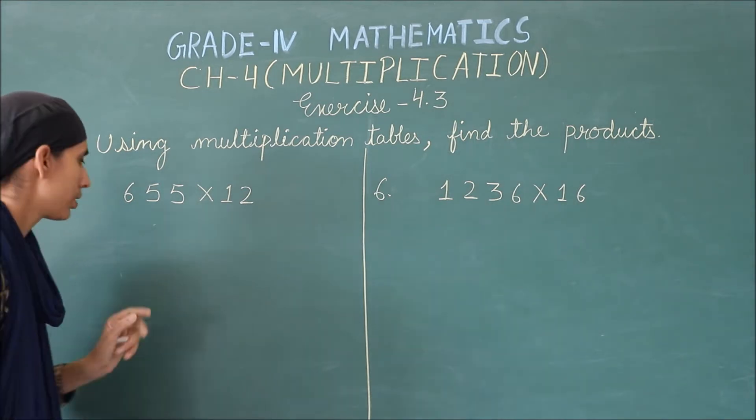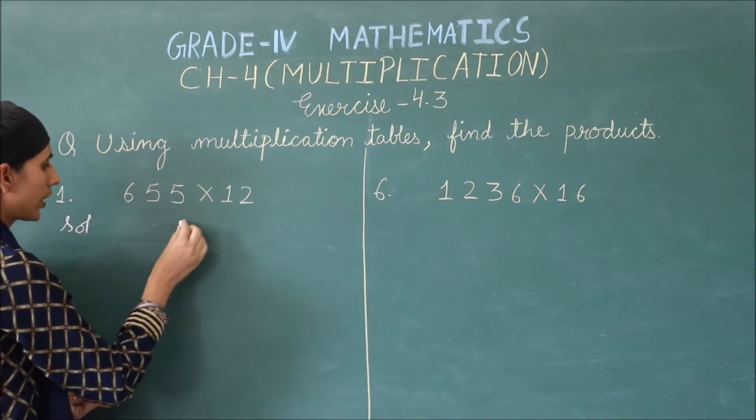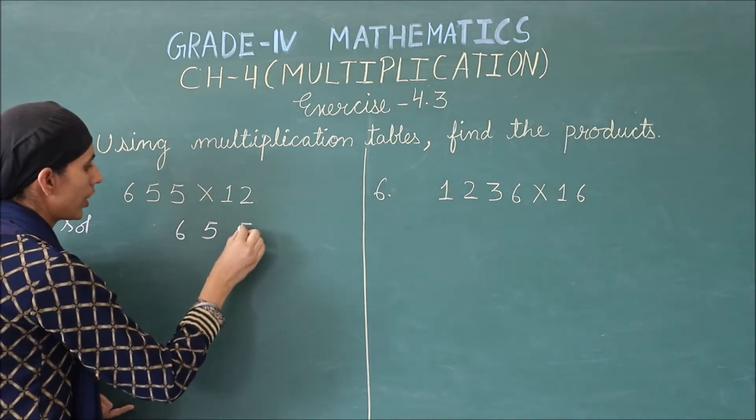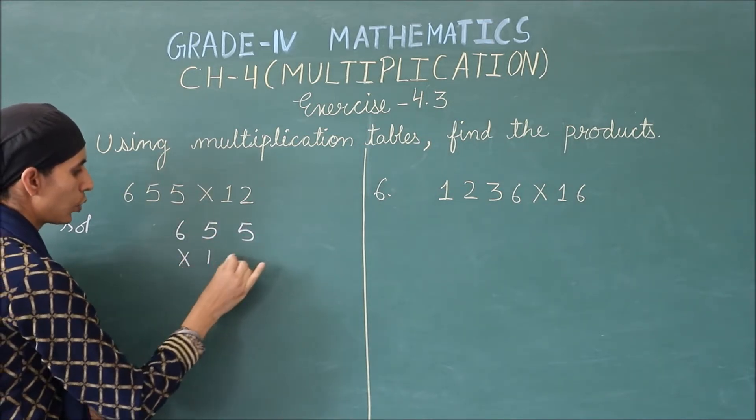Write down the multiplication. 655 multiplied by 12.